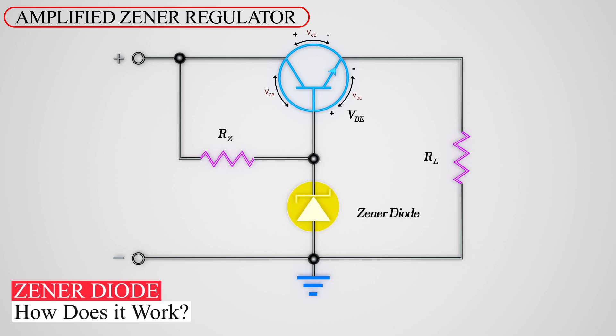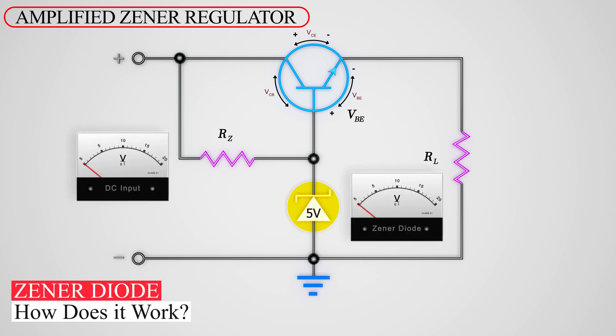The Zener diode is a fixed diode that maintains a given voltage value no matter what the unregulated DC input might be.